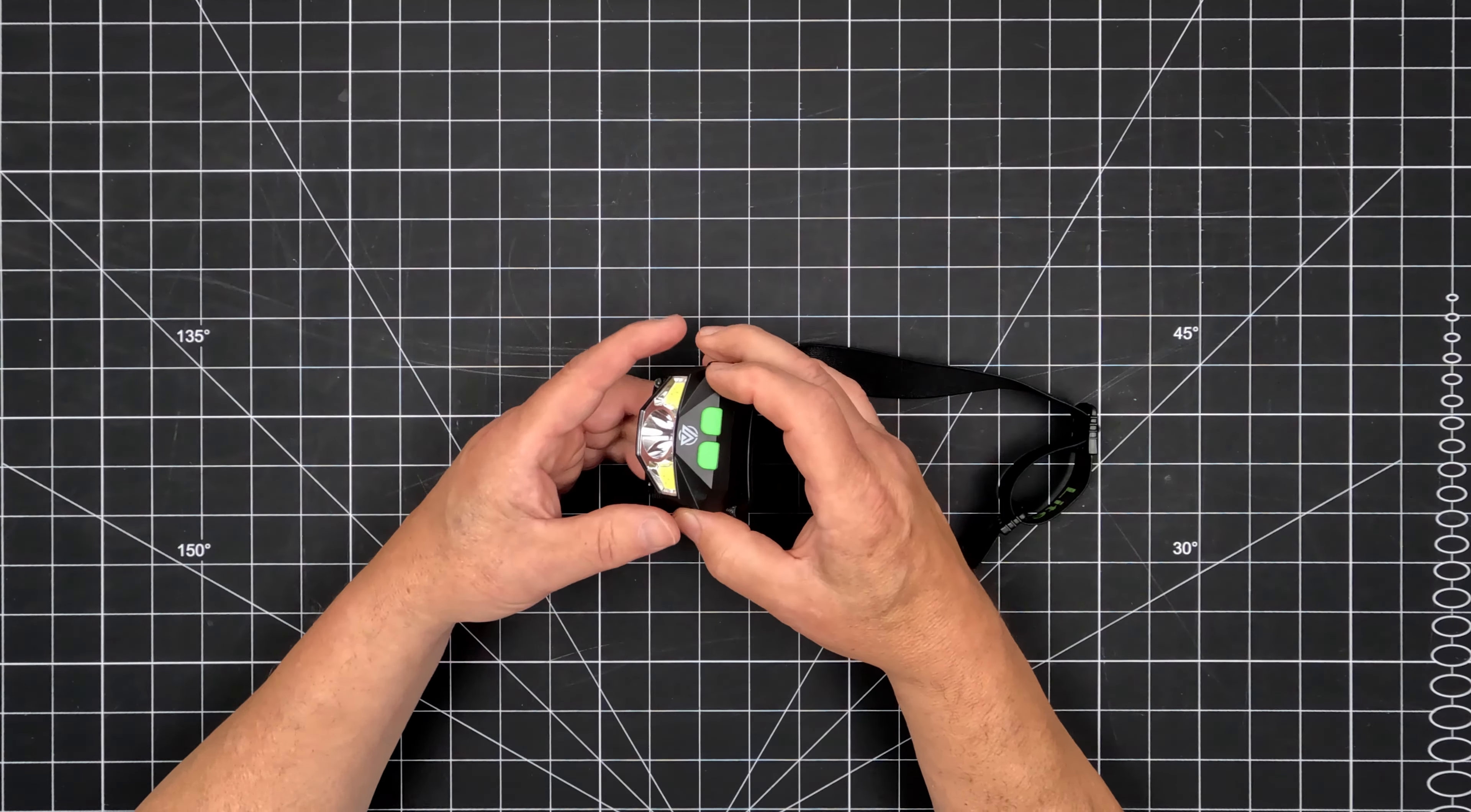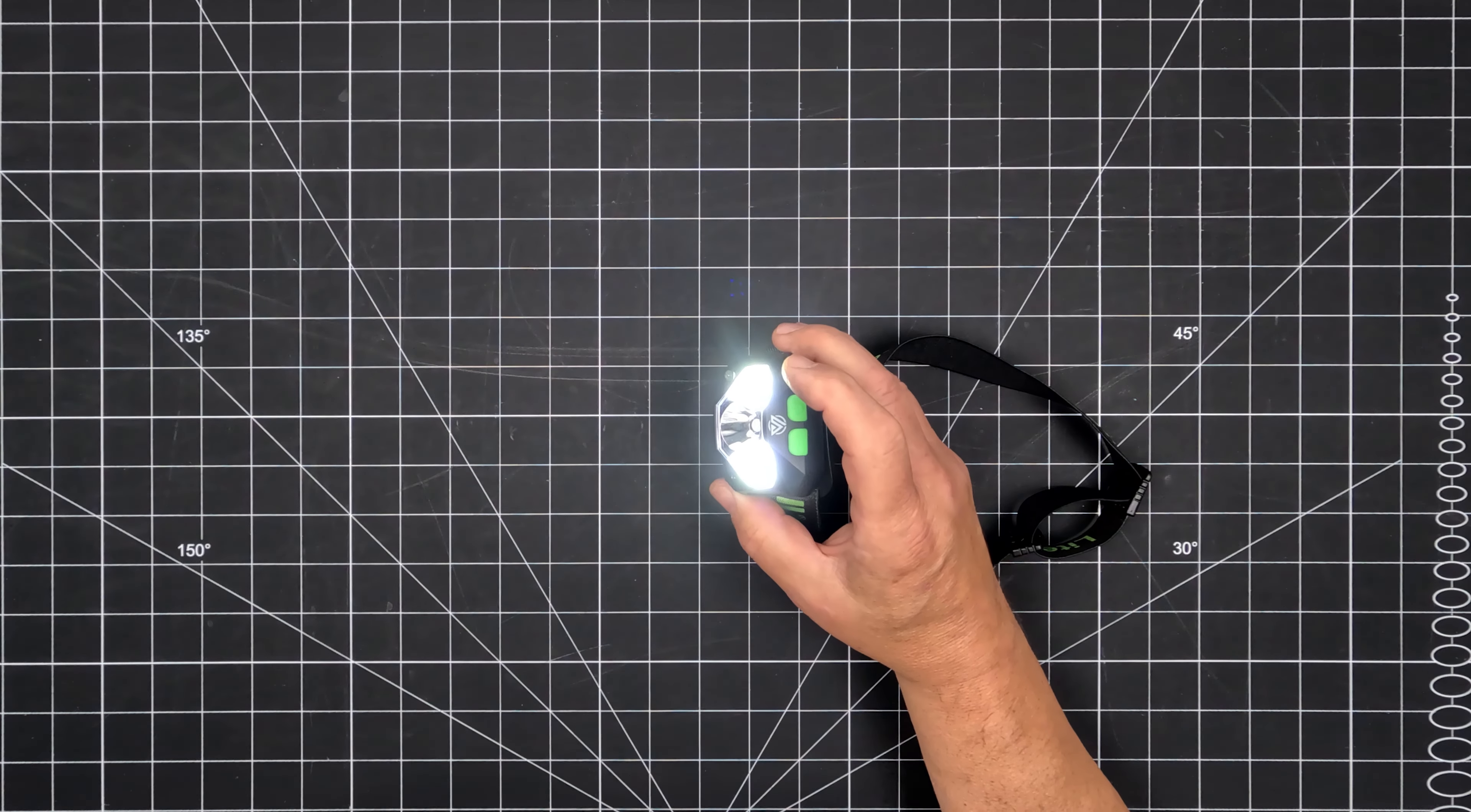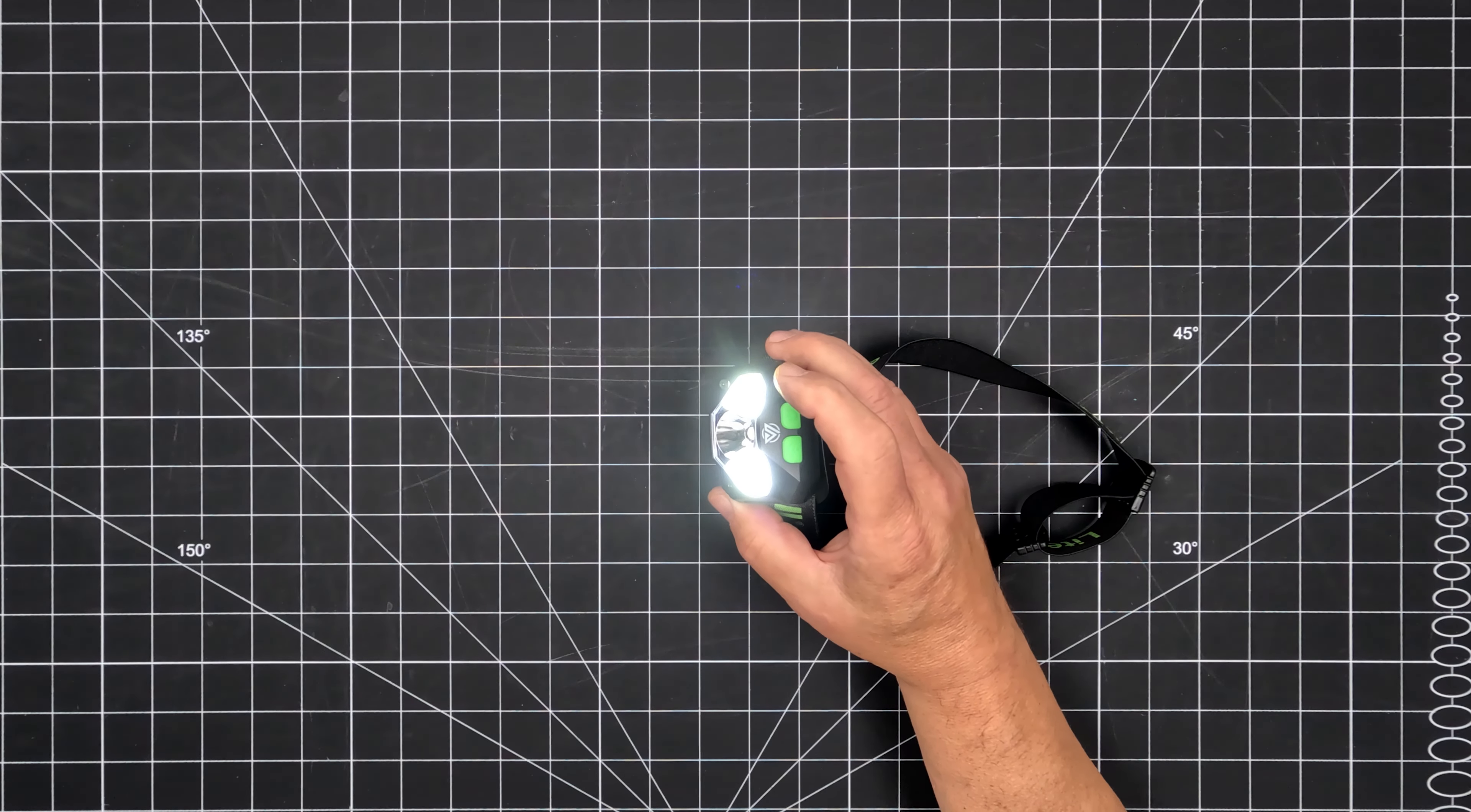First, repeatedly press the motion activation button to select your desired light mode. Then, simply swipe your hand past the light within 6 inches to turn it off. Swipe again to turn it back on.